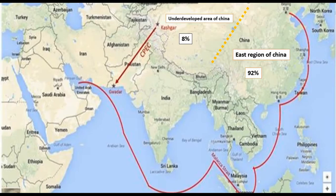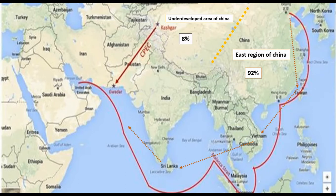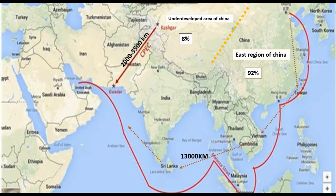China invests a large amount in CPEC — around 46 billion dollars, which may increase in the future. China's economy mostly depends on import and export with Middle East and European countries. Currently, China uses sea routes with a distance of around 13,000 km, paying tolls to countries like Vietnam, Sri Lanka, and Taiwan. After the completion of CPEC, this distance is compressed to 2,000 to 3,500 km. China will get a benefit of around 2 billion dollars annually.